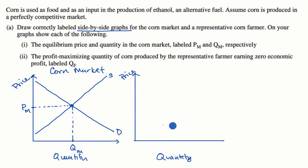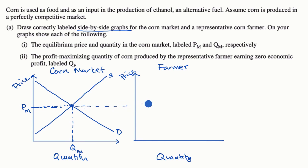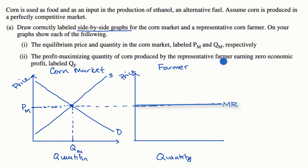This graph over here, we are going to draw the farmer — the farmer's firm right over here. The farmer is going to be a price taker. So whatever the equilibrium price in the market, that is going to be the price the farmer has to take. That market price is going to be the farmer's marginal revenue. They say the profit maximizing quantity produced by the representative farmer, earning zero economic profit, labeled Q sub F.